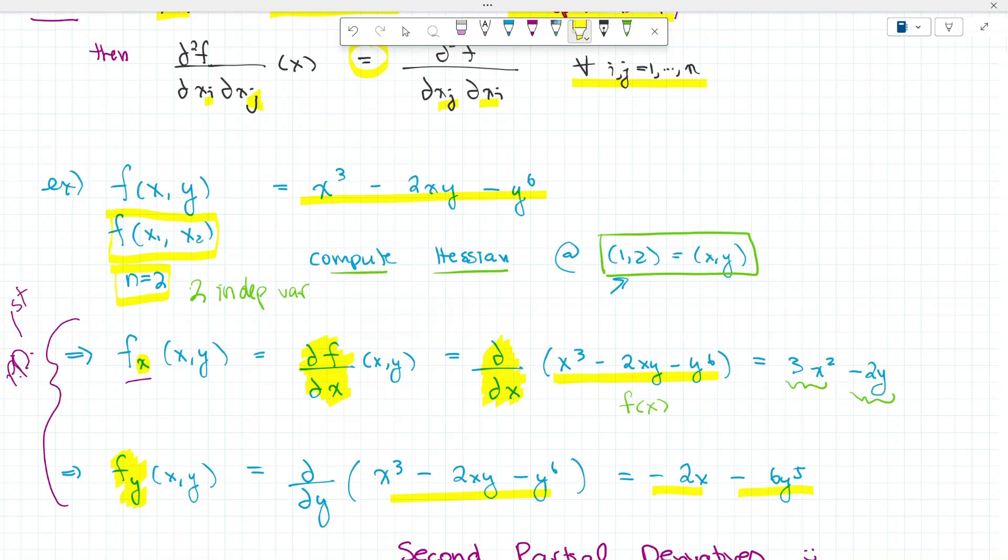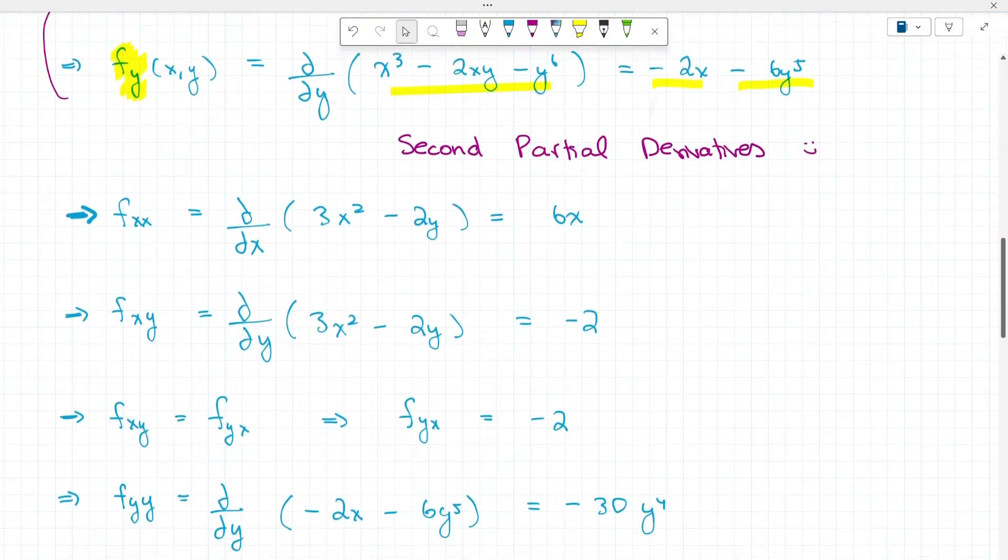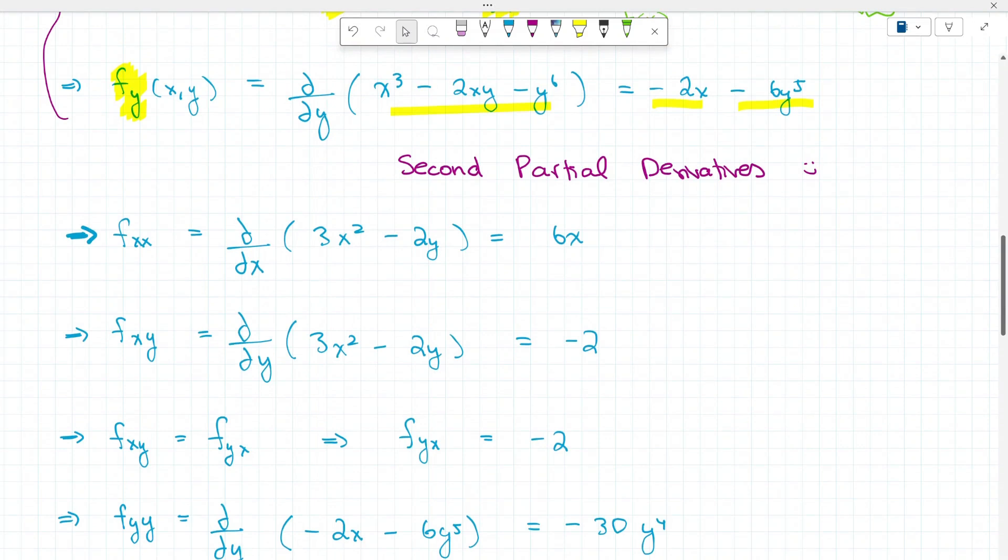Now let's move on to calculating the second partial derivatives. Since we have two variables, we're going to have four second partial derivatives. Let's start with number one. We're taking the second derivative of f with respect to x, so this is f_xx. This can also be written as the first partial derivative of the first partial derivative. Using the power rule here, this equals 6x.